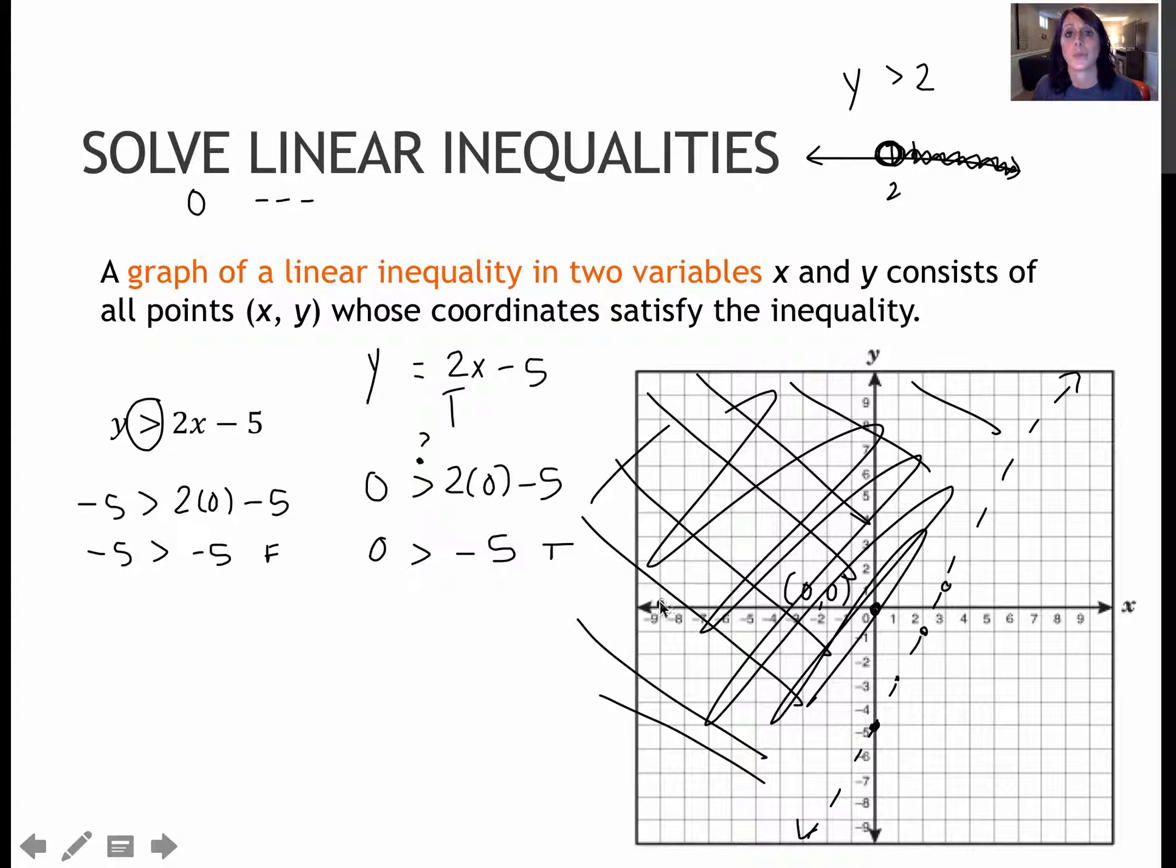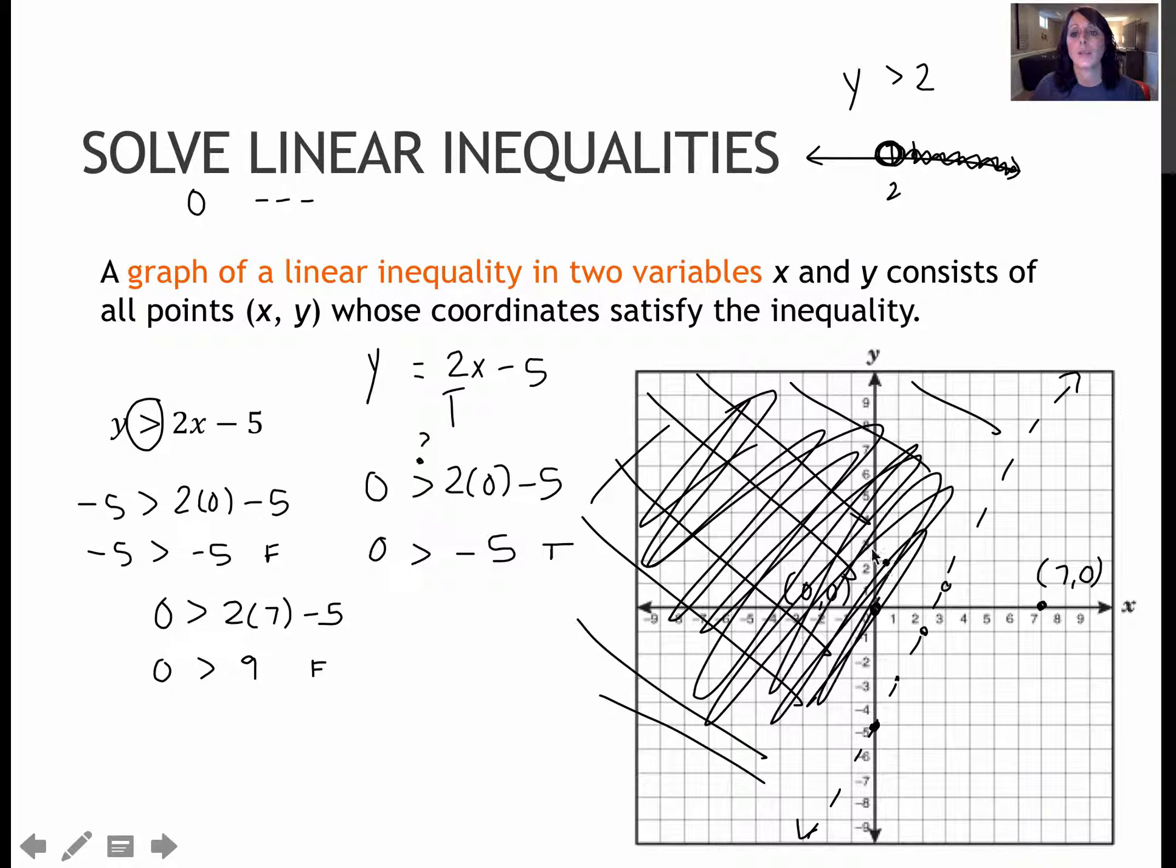If I were to have chosen a point that didn't work, that was not a solution, say for instance I chose the point 7, 0, and let's see what happens. 0 in for y, 7 in for x, I get 0 is greater than 14 minus 5, which is 9. 0 is greater than 9 is false, and because it's false, I should not shade towards the test point, but shade away from the test point, which again would make me shade the left side of that equation, or the left side of that graph.